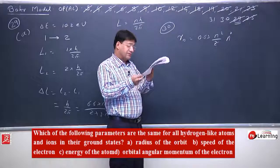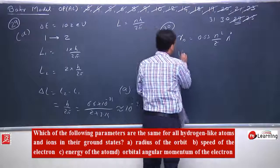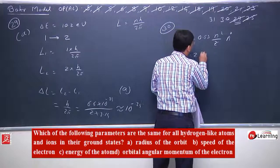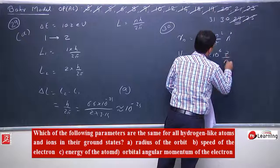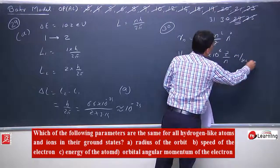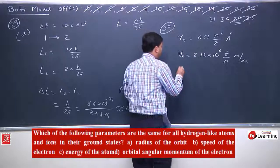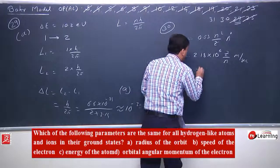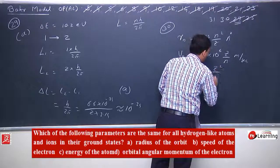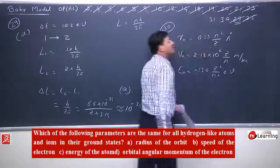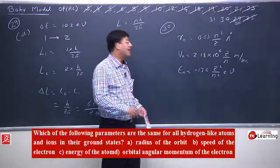So for different values of Z, radius will be different. Speed is also different — speed is given by 2.18 × 10⁶ × Z/N meters per second. For different Z, speed will also be different. Energy of electron in any Nth orbit is given by -13.6 × Z²/N² electron volts, so for different Z, energy will also be different.